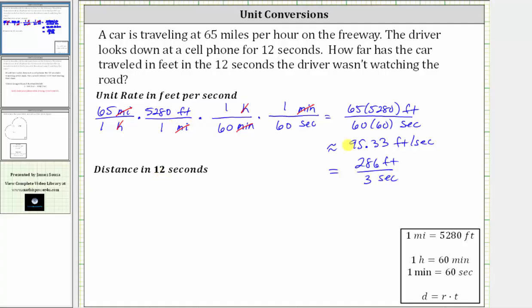We shouldn't use the rounded unit rate to find the distance traveled in 12 seconds, because we'd have an error in the distance. So we'll use the exact simplified rate of 286 feet per three seconds to determine the distance traveled in 12 seconds. Remember, distance is equal to rate times time, and therefore the distance traveled in 12 seconds equals 286 feet per three seconds times the time of 12 seconds. Notice the seconds simplify out, leaving us with the distance in feet.